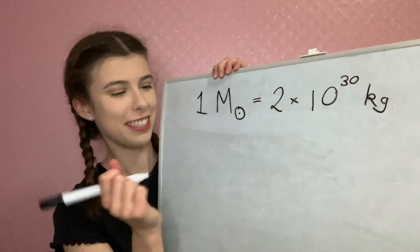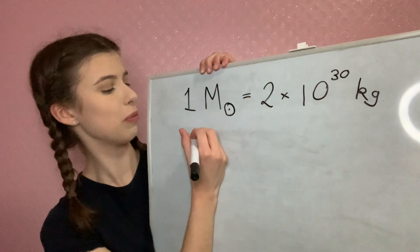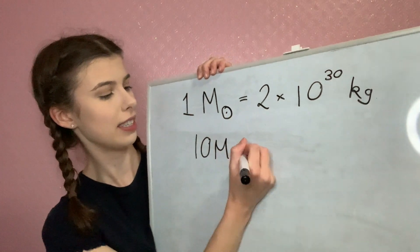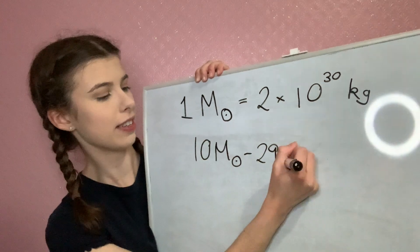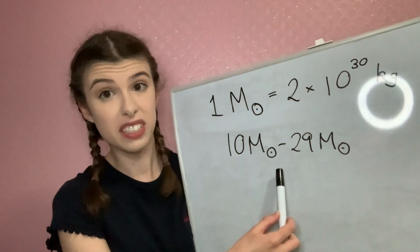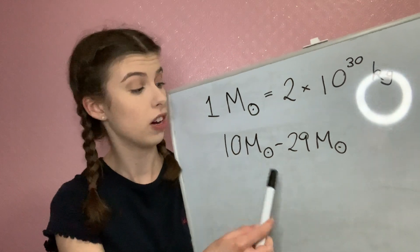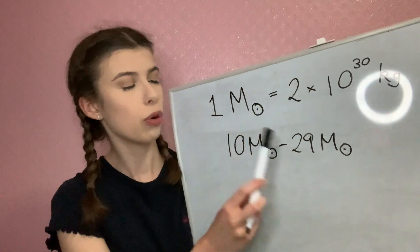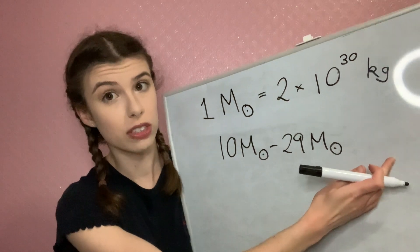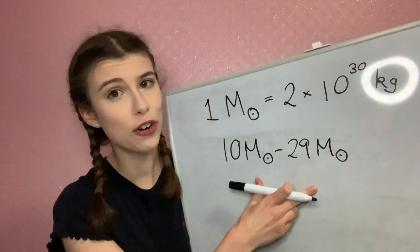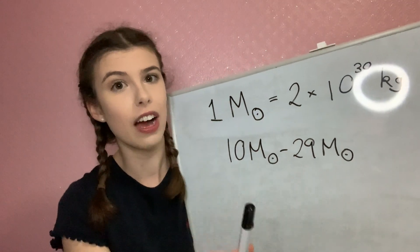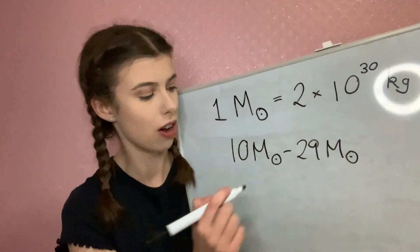Today we are interested in stars with masses between 10 solar masses and 29 solar masses. As far as stars go, these are pretty big stars, much more massive than our sun, although they're not the most massive of all stars. We are only considering this range because these stars end their lives as a neutron star.